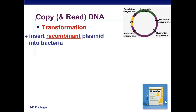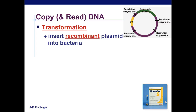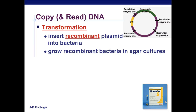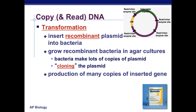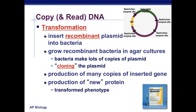To read and copy DNA: transformation is when you insert a recombinant plasmid into bacteria and grow the recombinant plasmid. The bacteria makes many copies of the plasmids — clones — and produces many copies of the inserted gene. The production of the new protein is the transformed phenotype. So, by altering the DNA and altering the gene, you're altering the protein, which is going to result in a different phenotype.